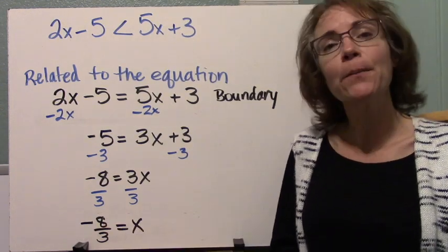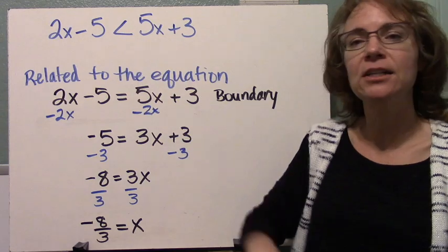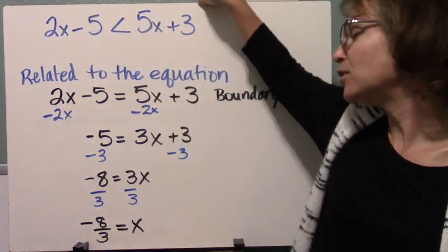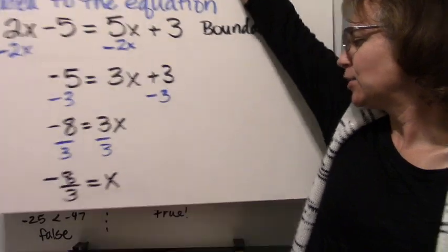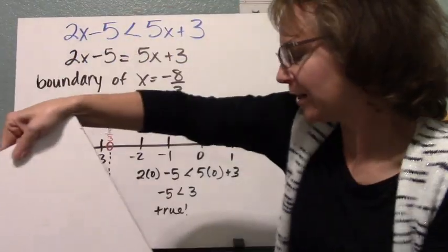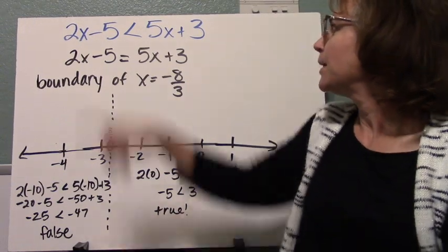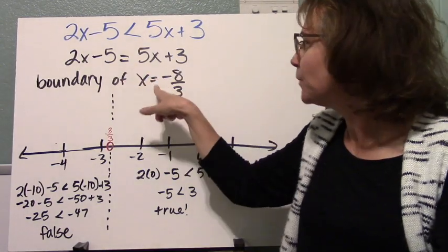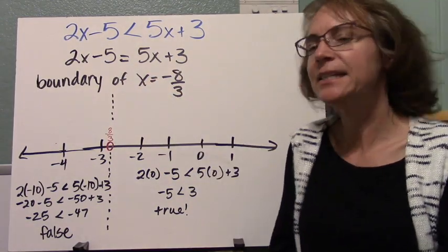Negative 8 thirds is our boundary point, but not included in the solution to the inequality. So we can use that boundary point then to go ahead and graph our inequality. So here we have our inequality. This is the equation. We found that the boundary point was x equals negative 8 thirds.